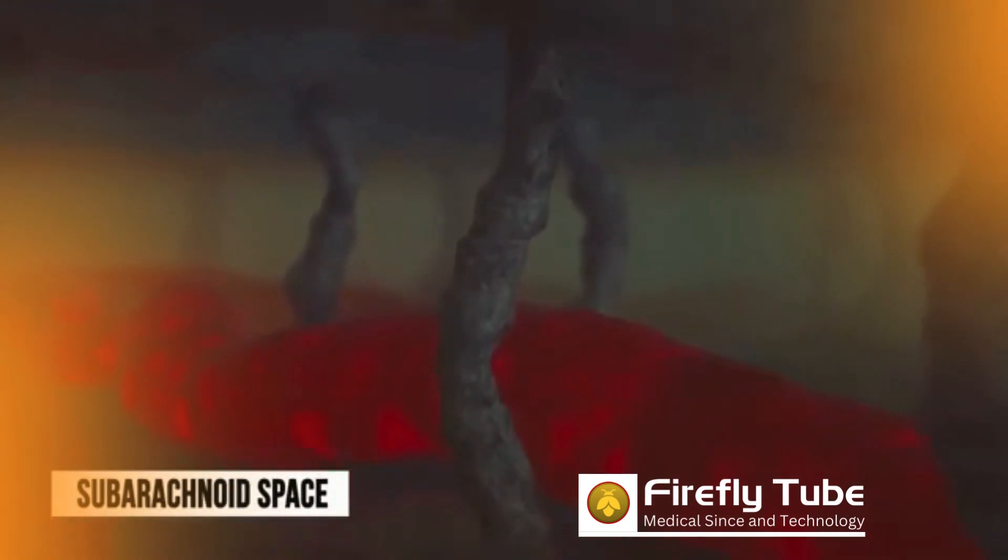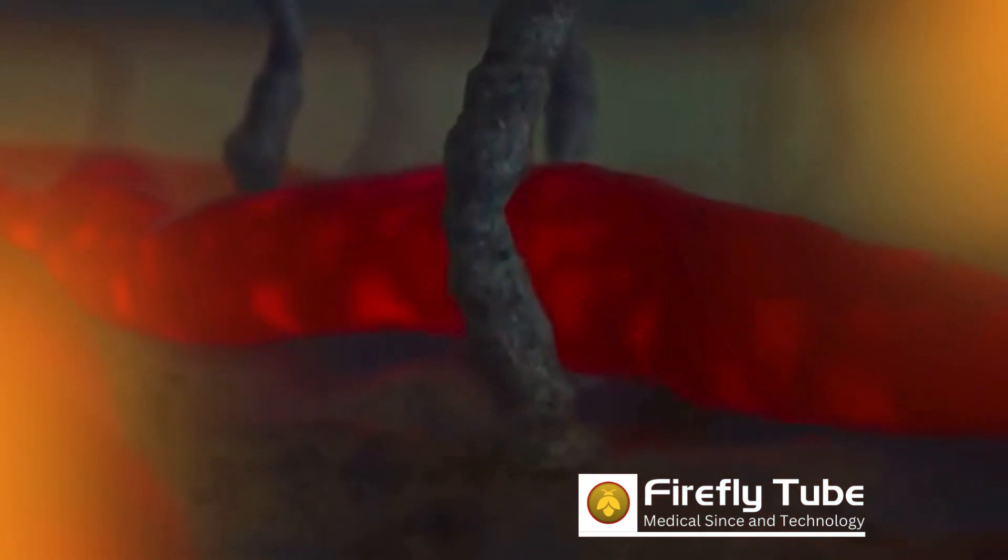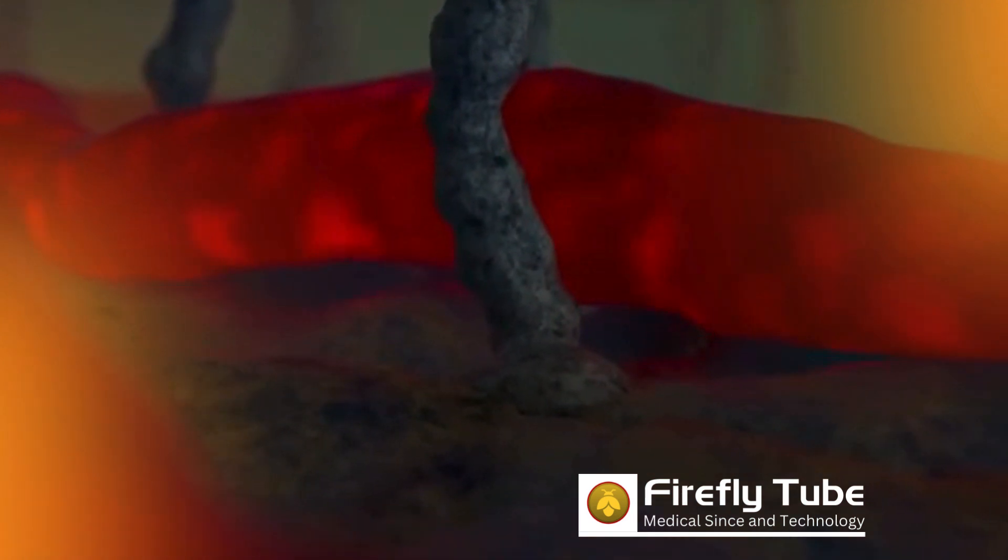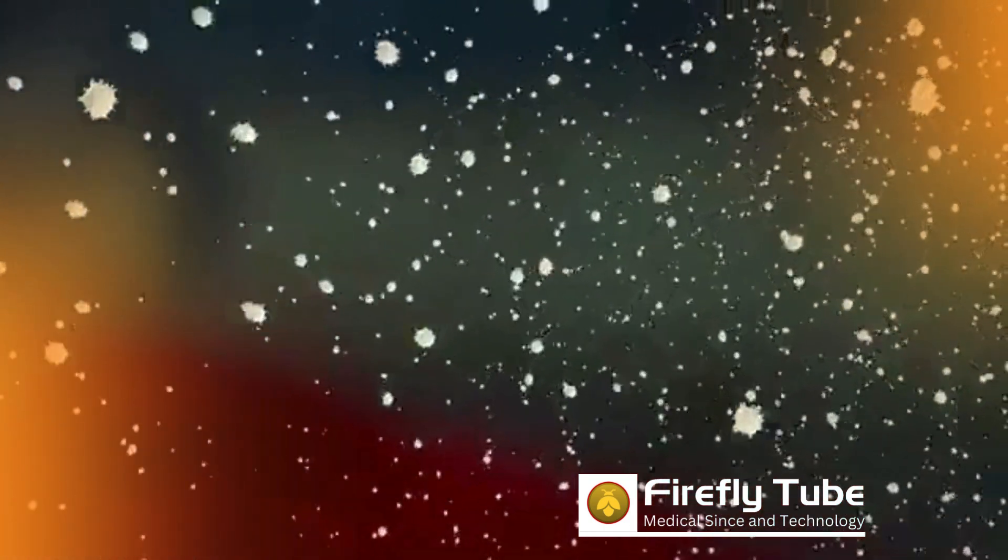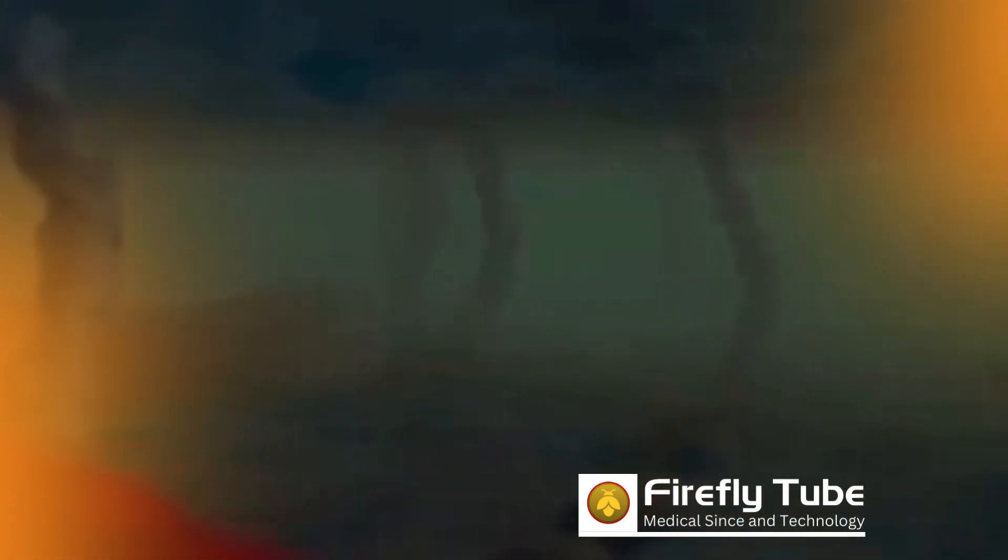The cerebrospinal fluid, which contains more than just immune cells, can be found between the pia mater and the arachnoid mater. This cerebrospinal fluid also serves as a cushion, protecting the brain in the event of rapid movement of the skull or a blow to the head.